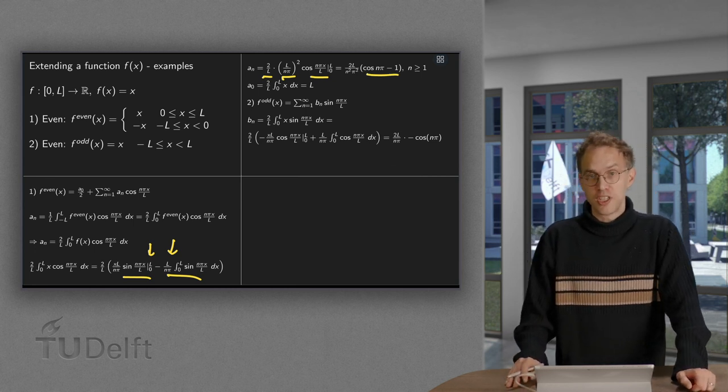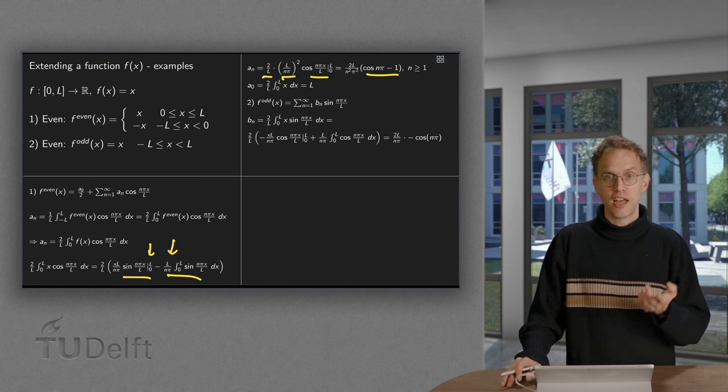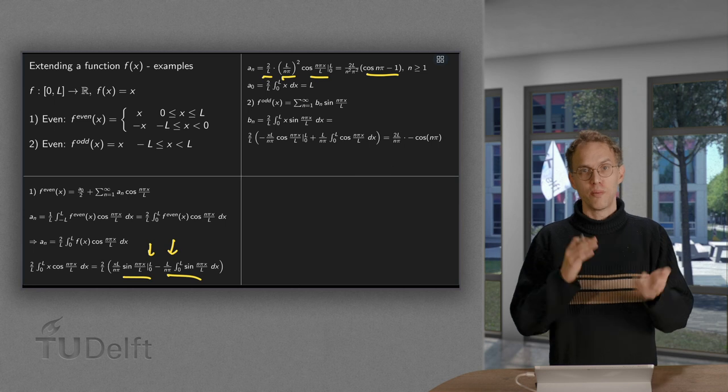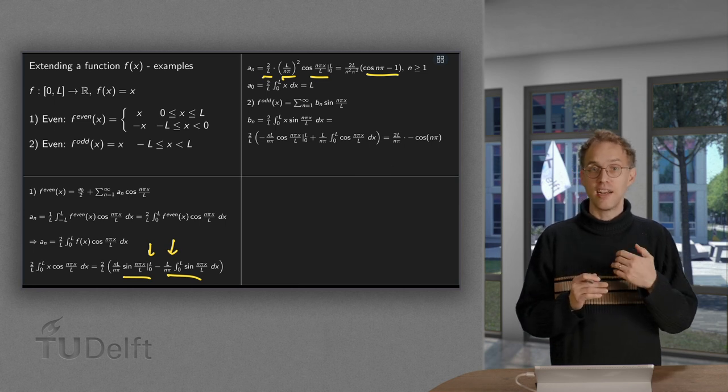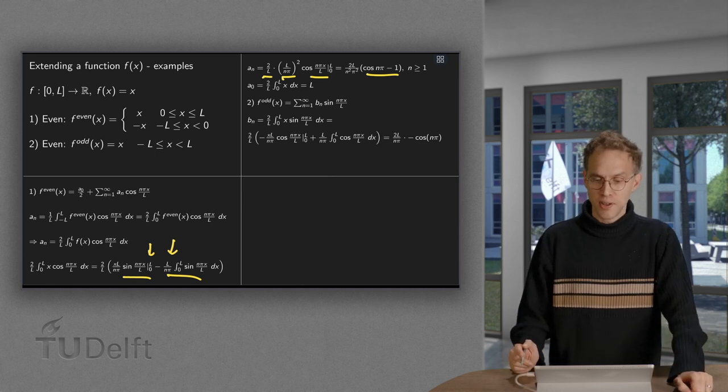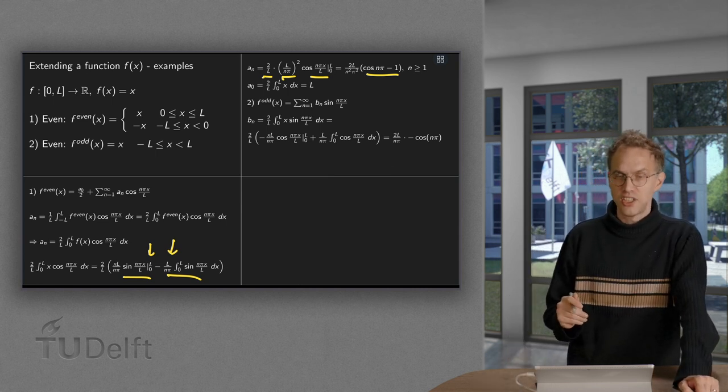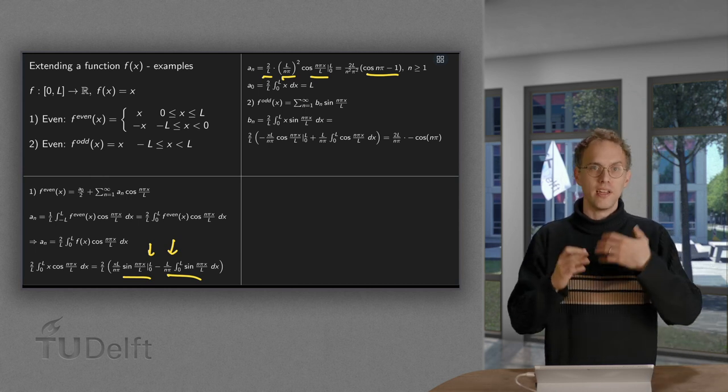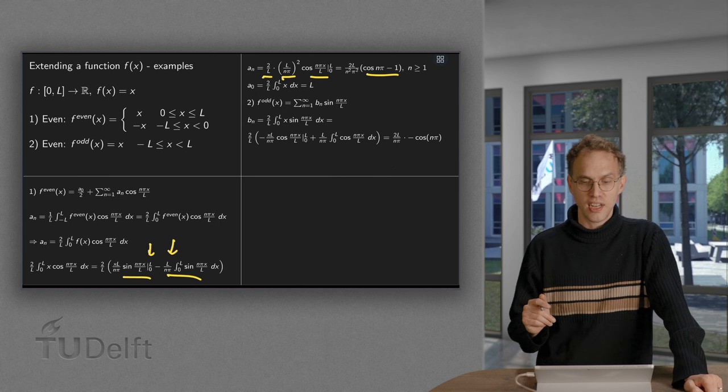If you want, you can simplify because cosine n pi equals minus 1 to the power n, so you get either 1 or minus 1, so those terms are either 0 or minus 2. You can simplify this a bit, but you can also just leave it as it is. Later on, I want to make a plot, so then you can also leave it at this.